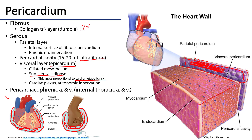The visceral layer of the epicardium is innervated by a different source than the parietal layer — it's under autonomic control, subject to the cardiac plexus. The pericardium itself is supplied by the pericardiacophrenic arteries, which are branches of the internal thoracic artery and also serve the diaphragm.